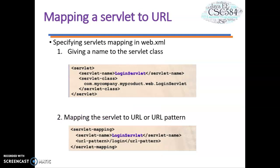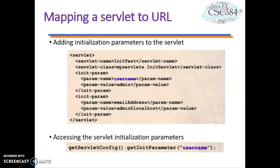Now let's look at how to map a servlet to a URL in the deployment descriptor. First, you give a name to the servlet class. The syntax starts with an opening servlet tag, followed by the servlet name and then the path of the servlet class. Second, you map the servlet to a URL pattern using the servlet-mapping element, mapping the servlet name to the URL pattern.